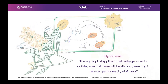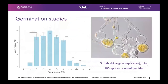In our study, we've applied this mechanism to the myrtle rust–Myrtaceae pathosystem. We hypothesized that topical application of Austropuccinia-specific dsRNA would silence essential genes, resulting in reduced pathogenicity of Austropuccinia and reduced incidence of myrtle rust disease. We started with germination studies to gain an understanding of optimal germination conditions and ensure consistent results. We found that Austropuccinia spores germinated optimally at about 16°C, dropping off significantly below 11°C and above 20°C.